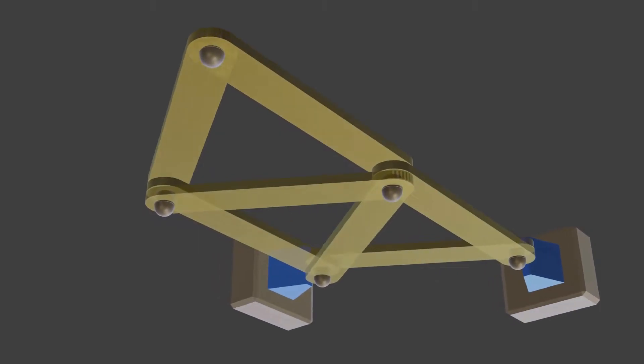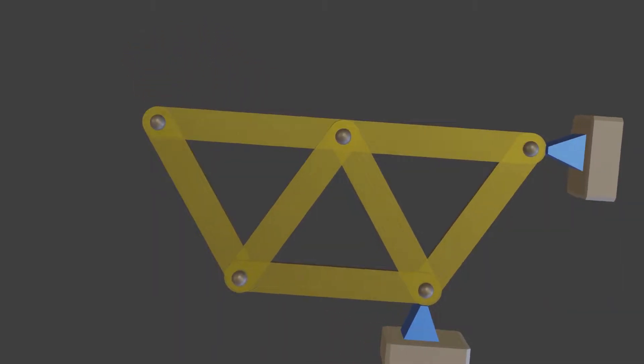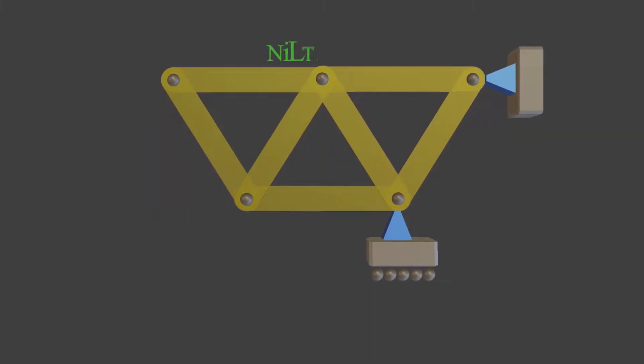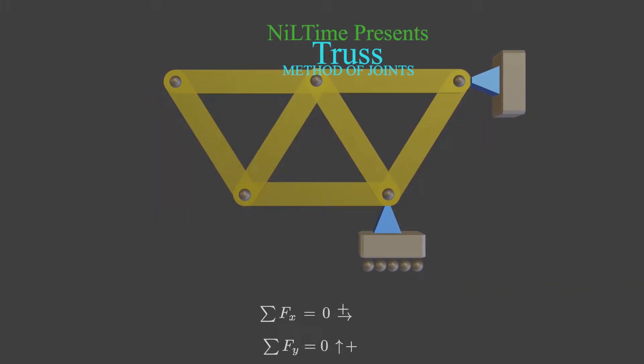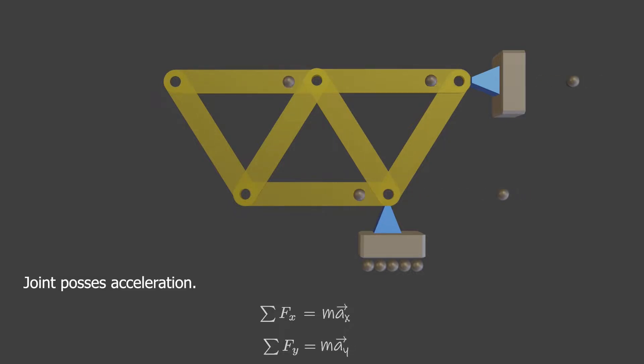If a truss is in equilibrium, then each of its joints is in equilibrium. That's why the total force that acts on x or y direction must be zero. If not, then the joint possesses acceleration. Joint having acceleration is impossible to imagine.